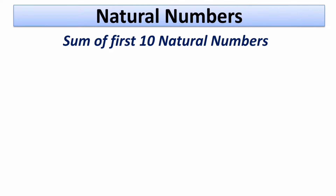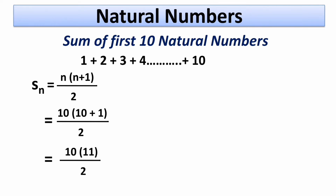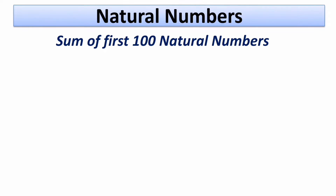Here we have to find out the sum of first 10 natural numbers: 1 plus 2 plus 3 up to plus 10. Write down the formula. Here n is 10, so putting values we get 10 times (10 plus 1) divided by 2. As per BODMAS we solve the bracket first, so we get 10 multiplied by 11 divided by 2, equals 110 divided by 2, equals 55.